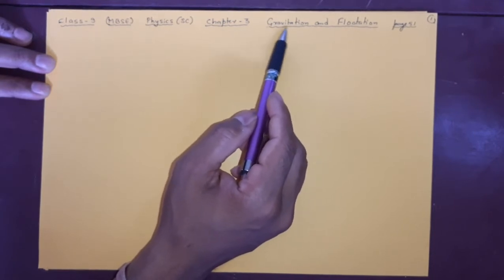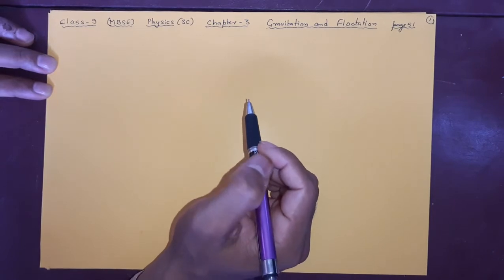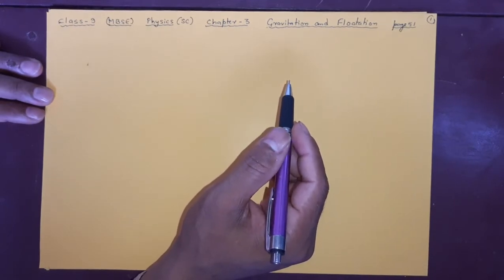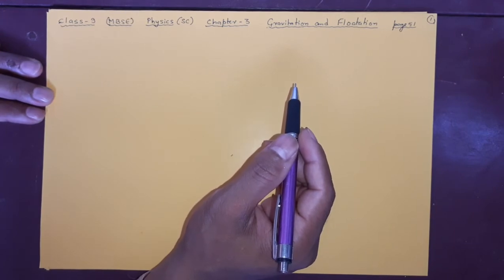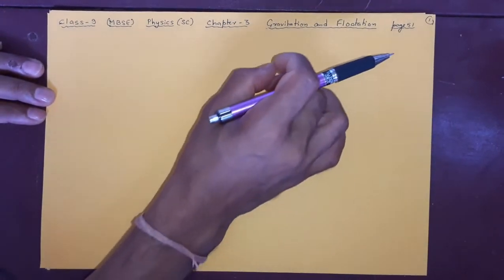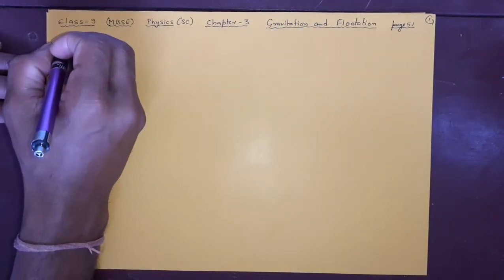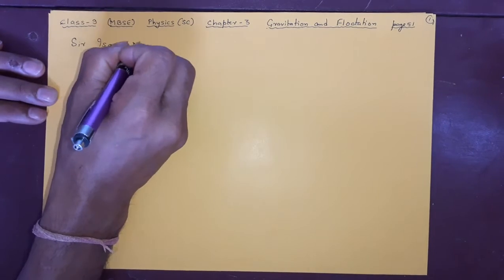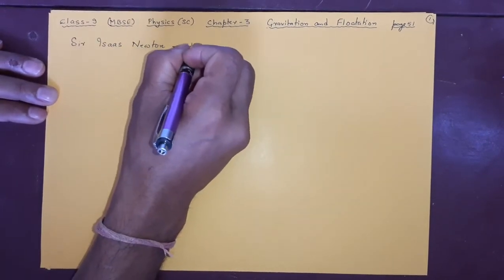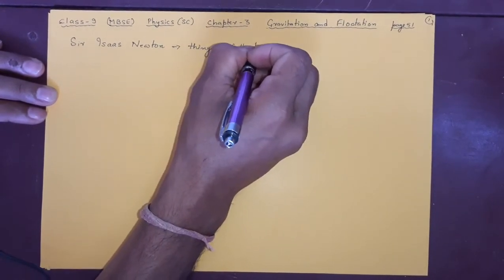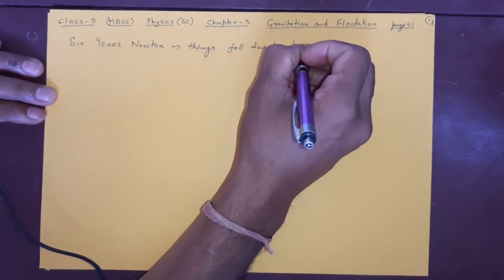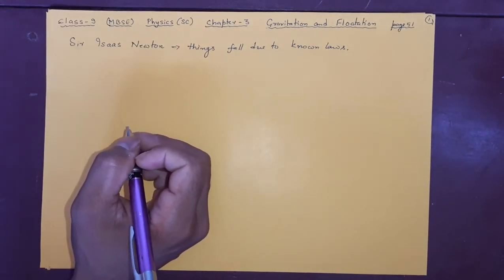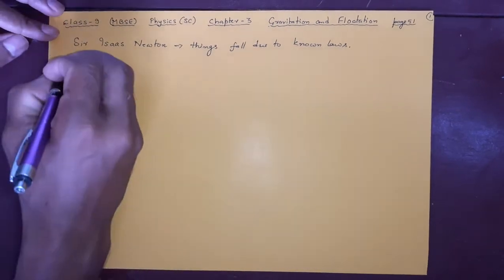In gravitation we will study more about force and the Universal Law of Gravitation. In early times, whenever things fell down, people used to think it was not because of a scientific reason, but because everything wants to rest on the earth. The first person who gave a scientific understanding was Sir Isaac Newton, who said that things fall due to known laws.